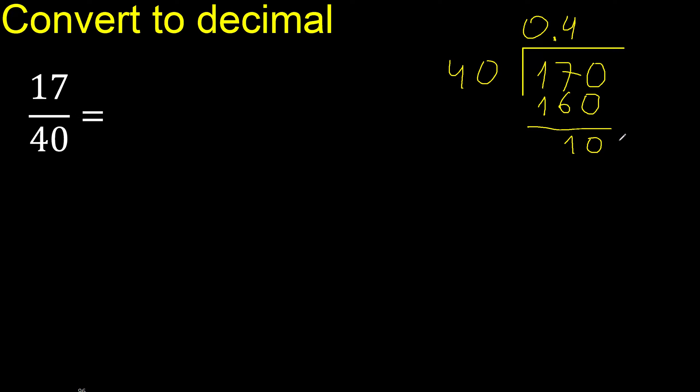There is no number that goes down, therefore complete — always complete with 0. The point goes here, and the point is written only once.